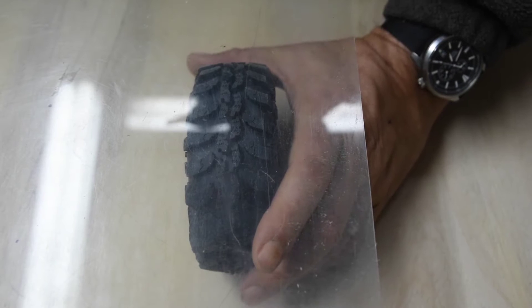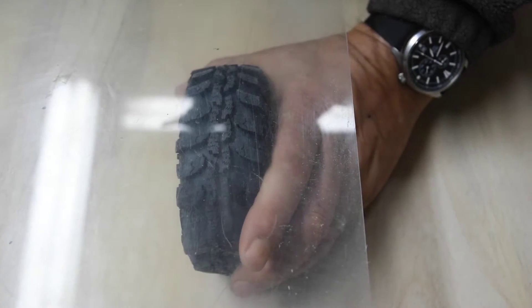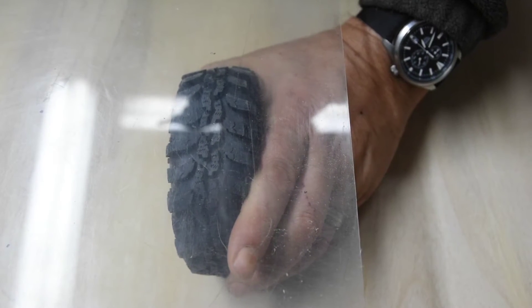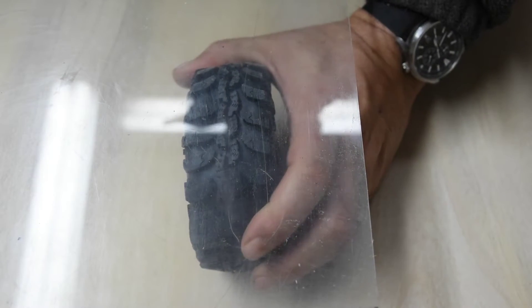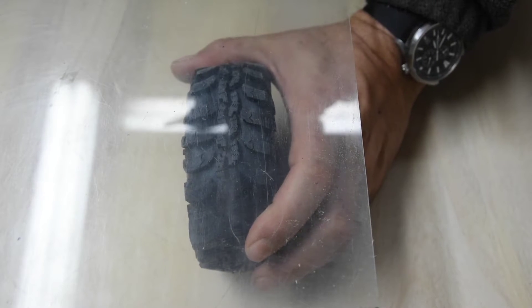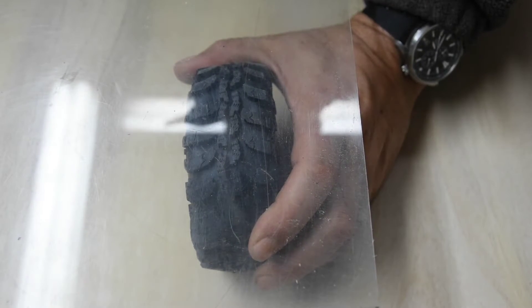Now watch what happens as we start simulating some turning and leaning. Notice that the tread collapses in on itself even more. I mean look at that. At this point that center tread is no longer making contact with the ground.